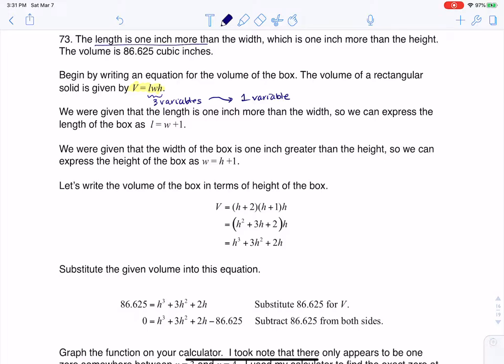They told us the length is one inch more than the width, so I've got L equaling W plus 1. And then they implied that the width is one more inch than the height, so I've got W equaling H plus 1.